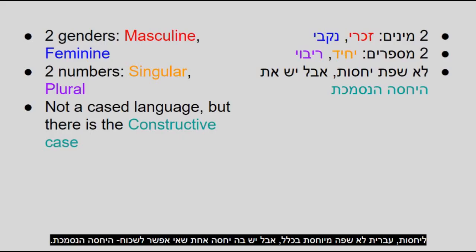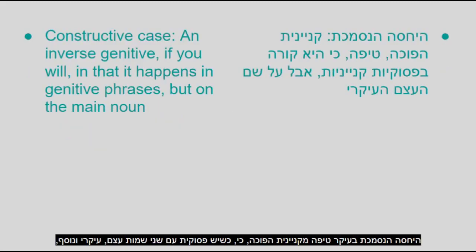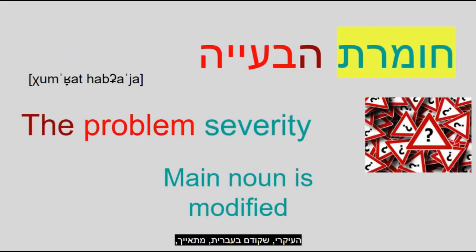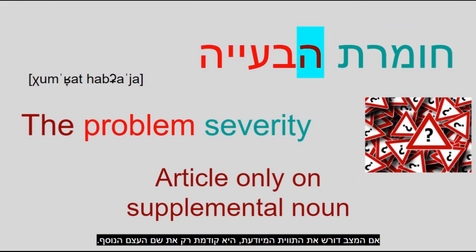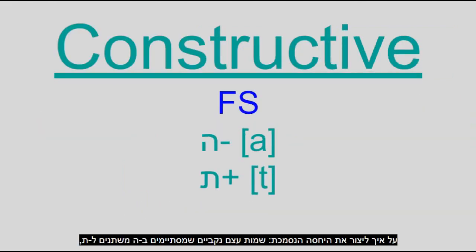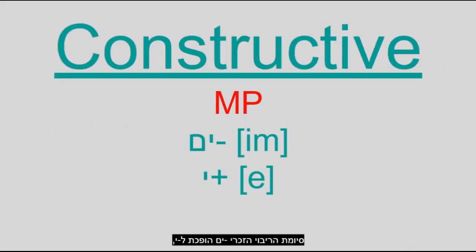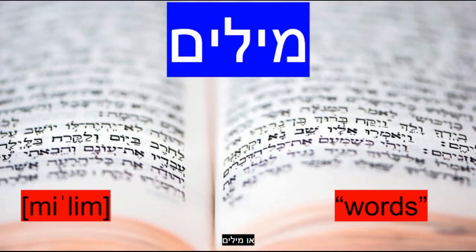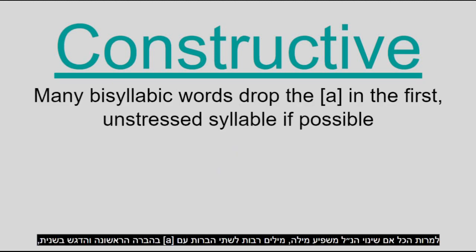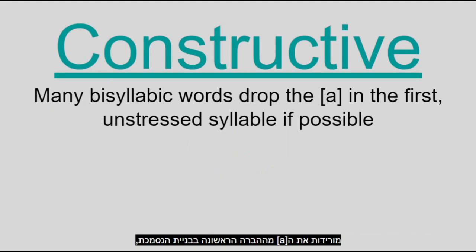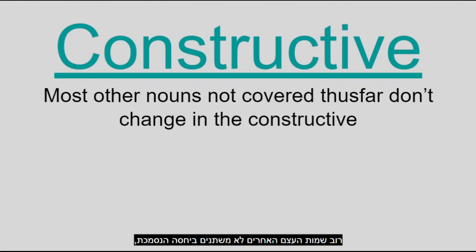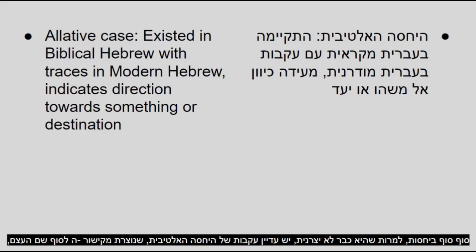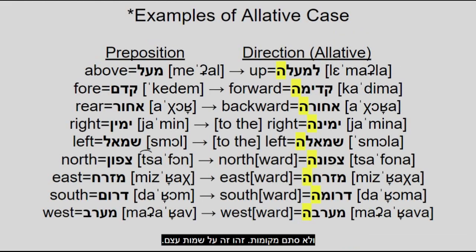Hebrew is not a case language overall, but it does have one case that can't be forgotten: the constructive case. The constructive case is basically a kind of inverse genitive — when there's a phrase with two nouns, the main noun which goes first gets modified sometimes, and the supplementary noun which goes second remains unchanged. If the situation requires the definite article, it only goes on the supplementary noun. Feminine nouns ending with He change to Tav in the constructive. The masculine plural suffix '-im' becomes '-ey.' Many bisyllabic words with 'a' in the first syllable drop the 'a' when forming the constructive. There are also traces of the biblical Hebrew alative case, made by attaching '-ah' to direction words to clarify they are destinations rather than just places.